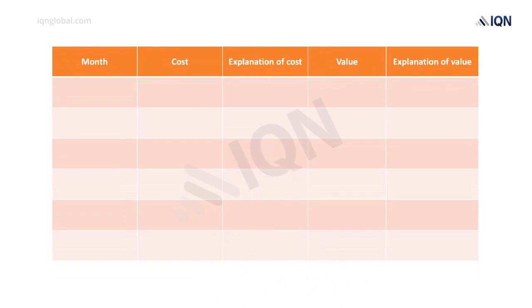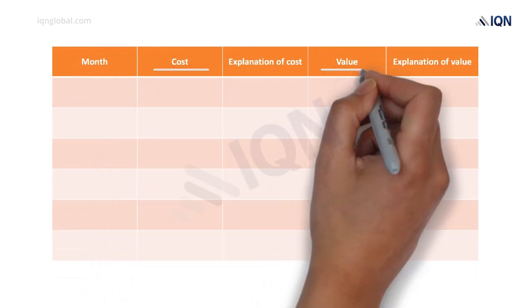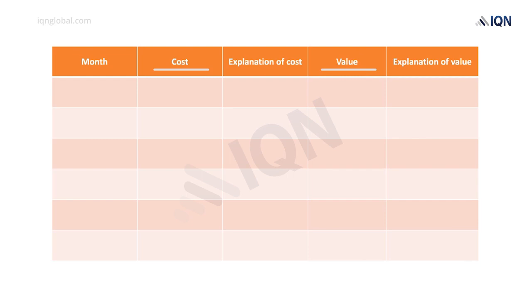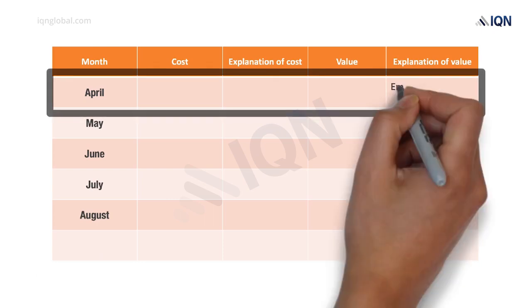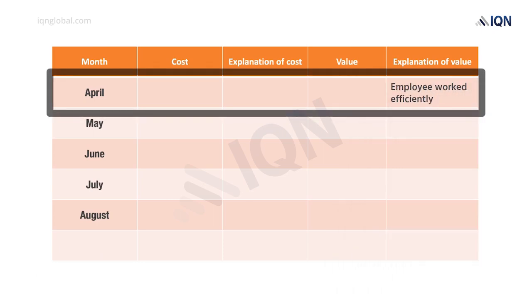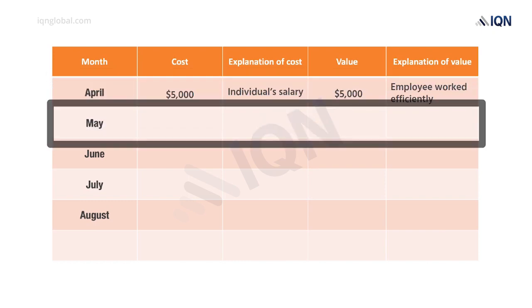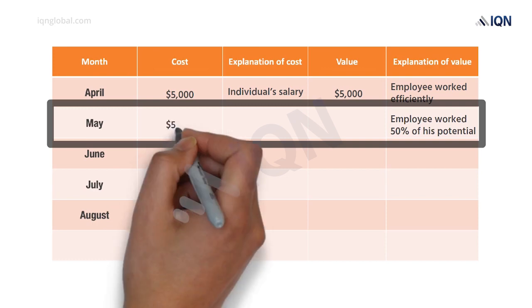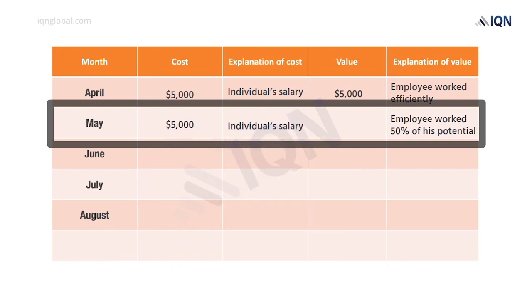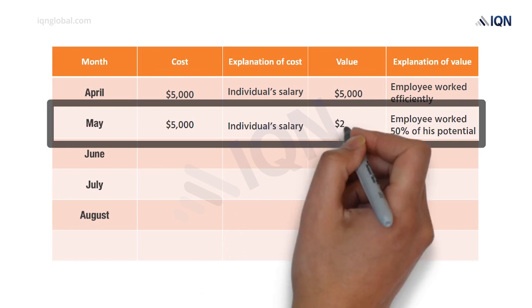Now, let's prepare a table presenting the monthly HR costs and monthly value generated over a period of five months, from April to August. In April, the employee worked efficiently, so the organizational cost was $5,000 and value generated was also $5,000. In May, the employee worked at 50% of his potential, so the cost incurred was $5,000, but the organization received value of only $2,500.